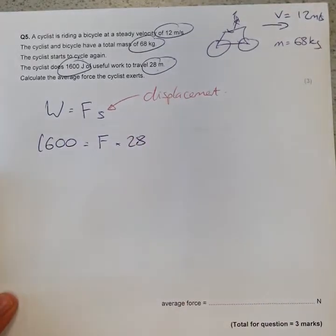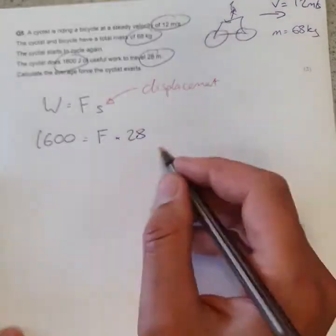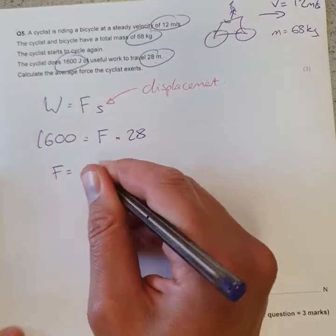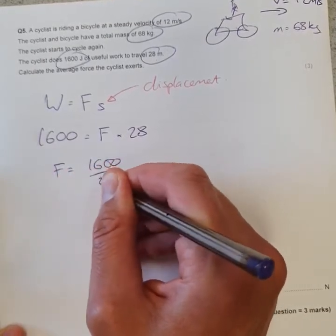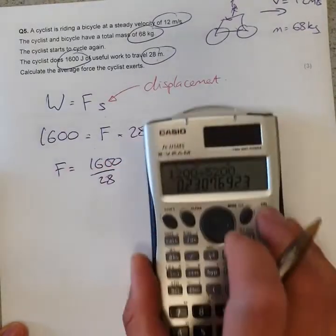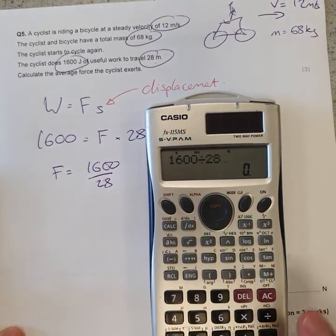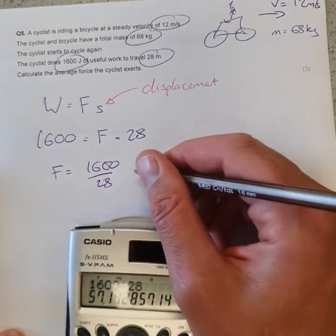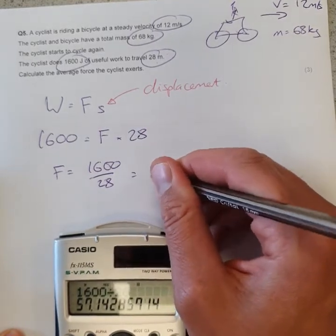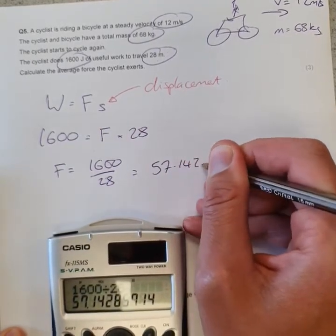And we know that it transferred that energy in traveling 28 meters. So a little bit of rearranging: F is going to be 1600 over 28. I think that's a job for a calculator.